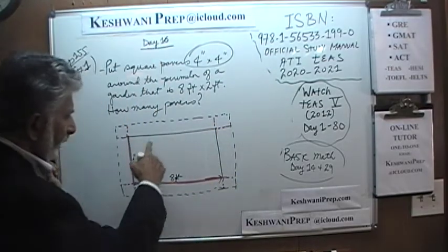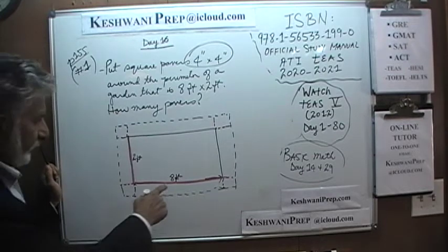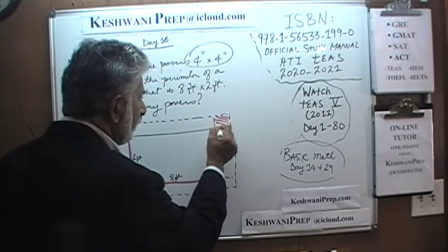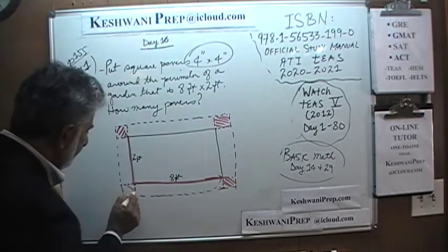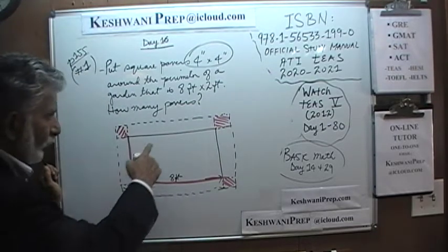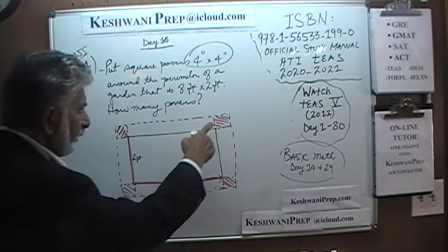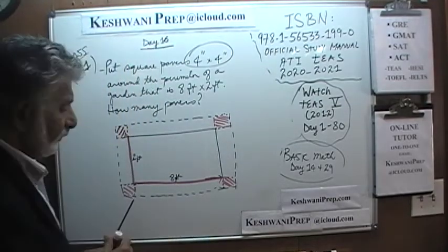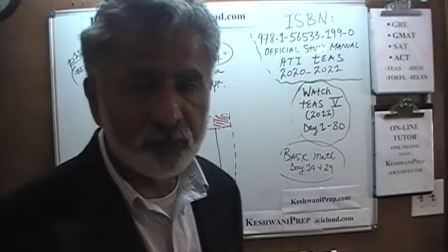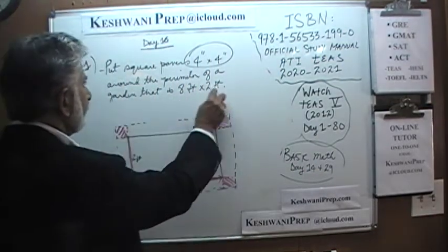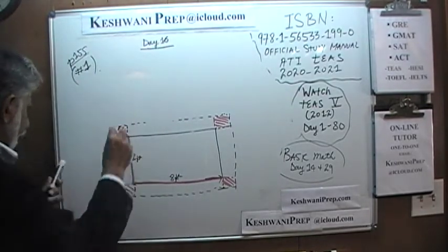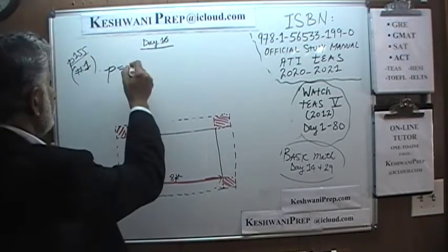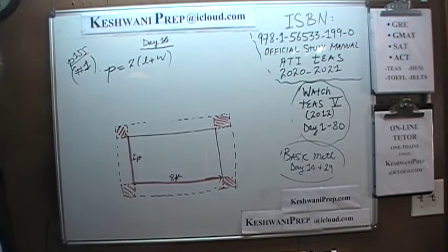If we simply look at the perimeter of this garden — which is the sum of these four sides — and count pavers only along the perimeter, we are going to miss those four corner squares. So whatever the perimeter happens to be, however many pavers we need to cover it, we must remember to buy four additional pavers for the four corners. Let's begin. Let's first figure out the perimeter.